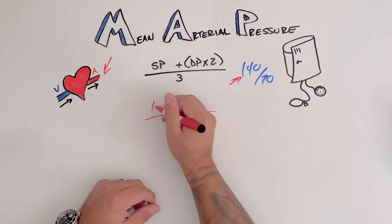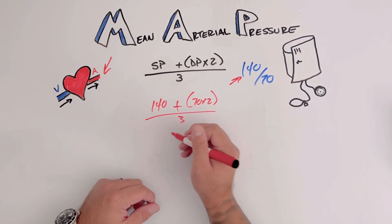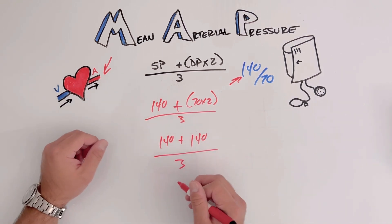We know our systolic is 140. Our diastolic is 70 times two over three. So we have 140 because we're multiplying plus 140, our systolic over three. That's going to give us 280 divided by three.